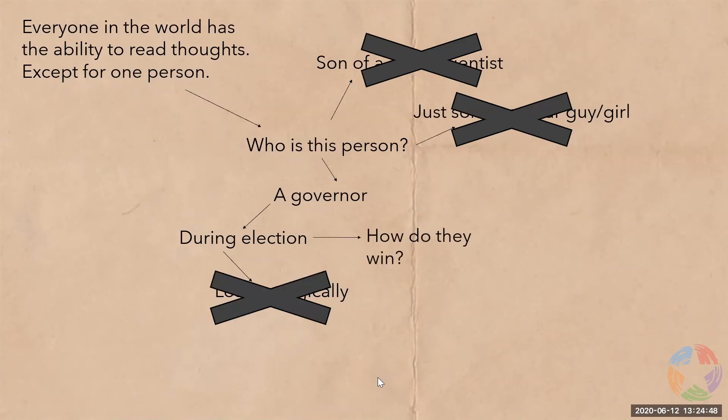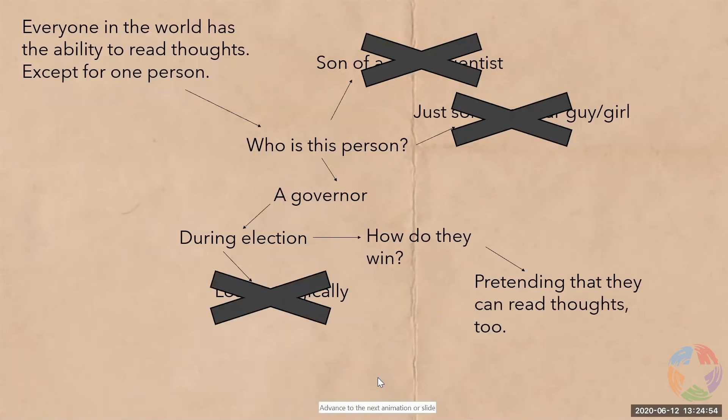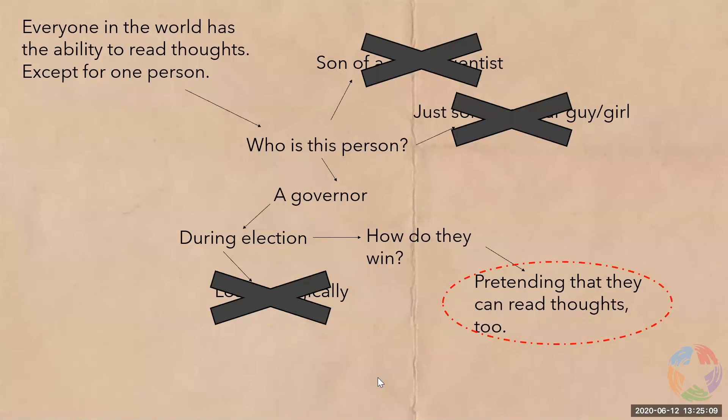Maybe he won. So how did he win? Maybe he won by pretending he could read thoughts too. That's an interesting thought — that's the jackpot. So I get a pen of a different color and circle it so I don't forget about it later on.